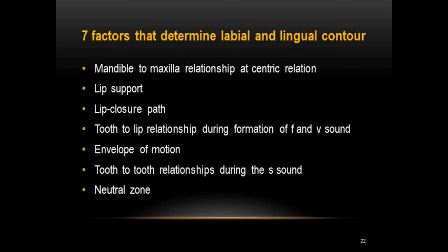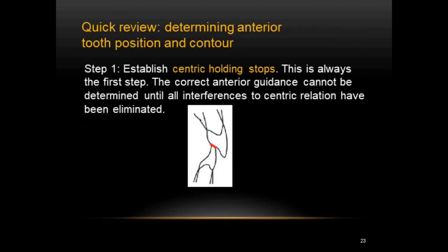The seven factors that determine the labial and lingual contour of the anterior teeth are: mandible-to-maxilla relationship at centric relation, proper lip support, the lip closure path, tooth-to-lip relationship during formation of F and V sounds, the envelope of motion, tooth-to-tooth relationship during the S sound, and the neutral zone. For the quick review of steps: step 1 is to establish centric holding stops — the correct anterior guidance cannot be determined until all interferences to centric relation have been eliminated.